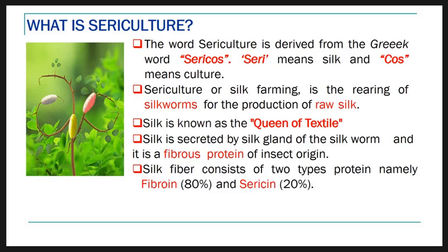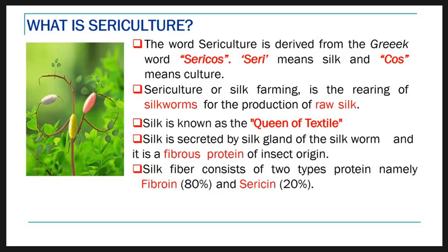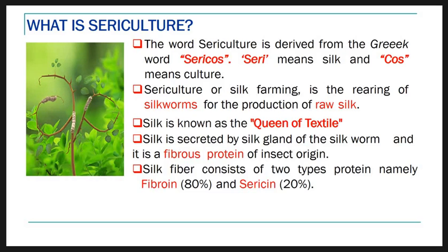Sericulture, or silk farming, is the rearing of silkworm for the production of raw silk. In other words, sericulture is the rearing and management of silkworm for the production of raw silk for economic purposes. Silk is used in all the textile industries to manufacture many types of silk cloth, including pure silk, which is very attractive and expensive. There is a lot of demand for raw silk, which is why silk is also known as the queen of textiles.